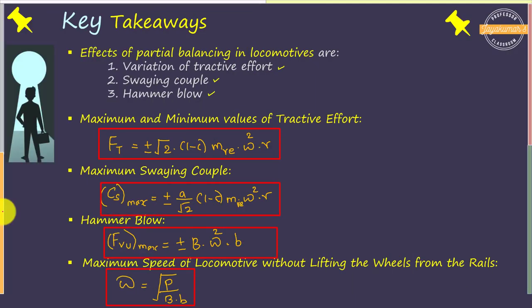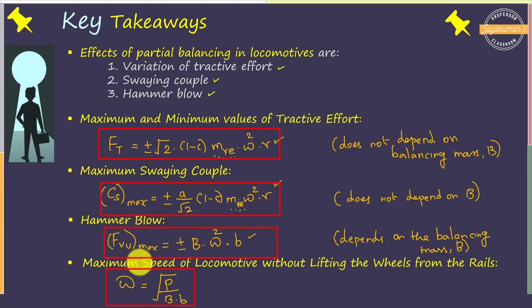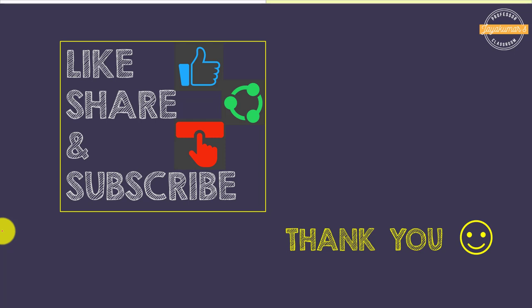To summarize: the three effects of partial balancing of locomotives are variation of tractive force, swaying couple, and hammer blow. To determine the hammer blow or limiting speed of the locomotive, we must know the value of the balancing mass B. How to determine the balancing mass in a two-cylinder locomotive will be discussed in the next class using a numerical problem. Hope this video is useful to you. Thanks for watching. Take care. Bye.